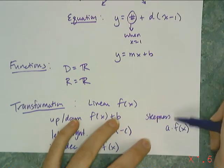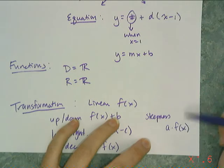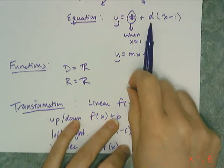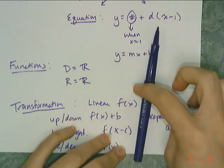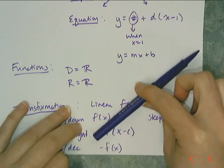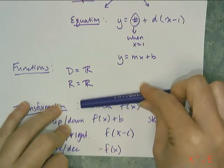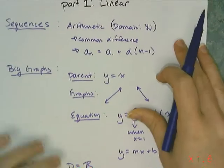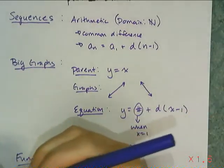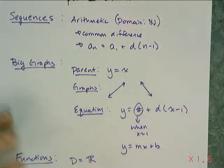If the absolute value of that constant was greater than 1, I'd get a steeper line. If I had a constant between 0 and 1 or between 0 and negative 1, it would decrease the steepness. So we've been looking at linear functions for a while, and this is so far all we know about them.